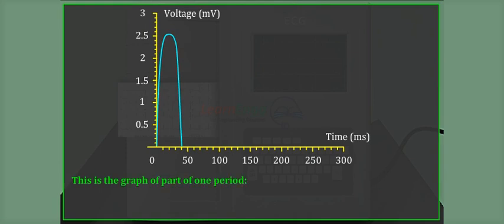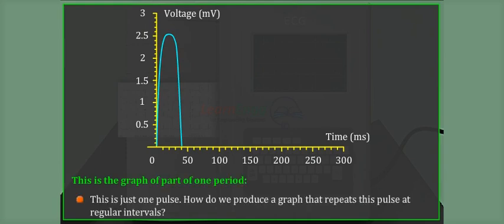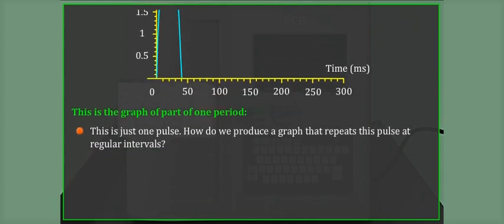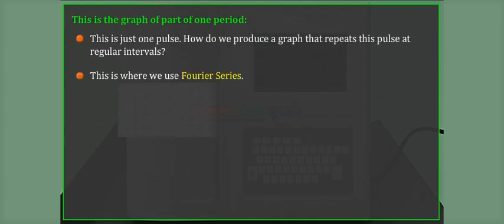This is the graph of part of one period. This is just one pulse. How do we produce a graph that repeats this pulse at regular intervals? This is where we use Fourier series.